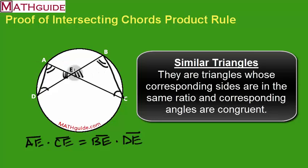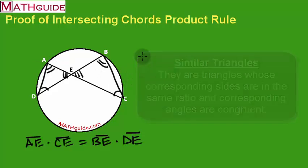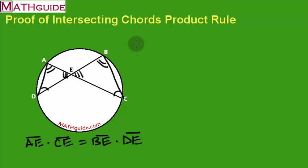Anytime I have similar triangles, I know that their sides are in the same ratio. Let's talk about which triangles are similar. That's actually an important part about this problem. So I know that triangle ADE is similar to triangle BCE.